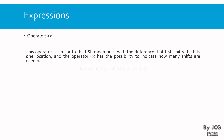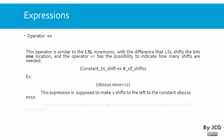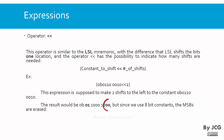We have another operator: the shift left. This operator is similar to the LSL mnemonic, with the difference that LSL shifts bits one location, while this operator lets you indicate how many shifts you want on a constant. The syntax is: the constant to shift, then the number of shifts on the right. For example, if we have the constant 0b01100010 in binary and want to shift it two places to the left, the expression makes two shifts. We fill the right with zeros, and the two bits that go past the most significant position are removed, giving the result.